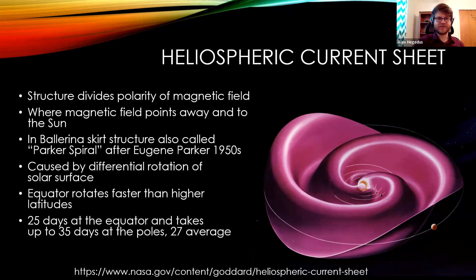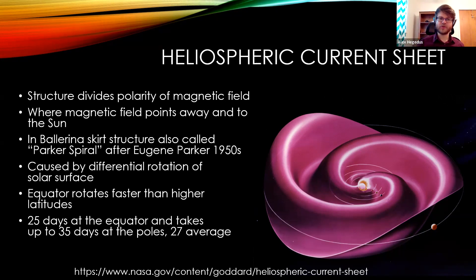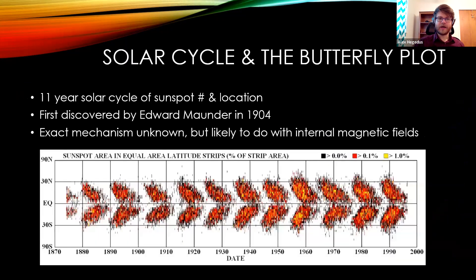Another interesting fact is that this rotation is differential — the sun rotates at different speeds at different latitudes. It spins most quickly at the equator, taking about 25 days for a surface feature to complete a full rotation, and rotates slower toward the poles, taking about 35 days at the poles. This averages out to around 27 days for most common sunspot features, which are not quite at the equator but a little above or below it.